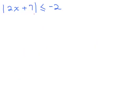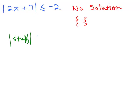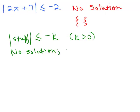Here's one more. The absolute value of 2x plus 7 is less than or equal to negative 2. Is it possible to have the absolute value of something less than or equal to negative 2? No, because absolute value always has to be positive — it can't be less than 0, and certainly not less than a negative number. So this also has no solution. You can generalize: any time you have the absolute value of some stuff less than or equal to some negative number — written as negative K where K is a positive number — the solution is no solution. But I don't recommend memorizing this; just look at each problem and think before you start working it out.